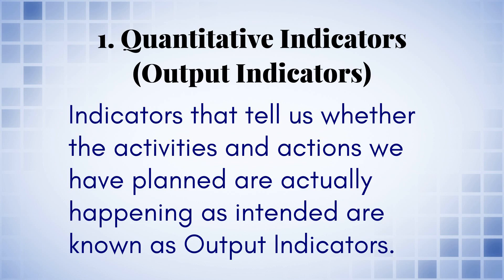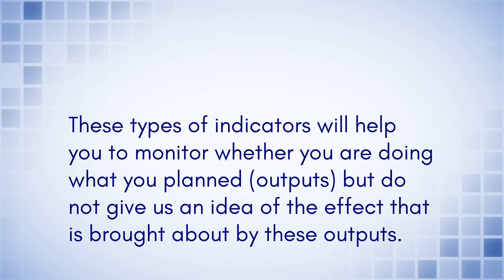1. Quantitative indicators — output indicators. Indicators that tell us whether the activities and actions we have planned are actually happening as intended are known as output indicators. These types of indicators will help you to monitor whether you are doing what you planned in terms of outputs, but do not give us an idea of the effect that is brought about by these outputs.